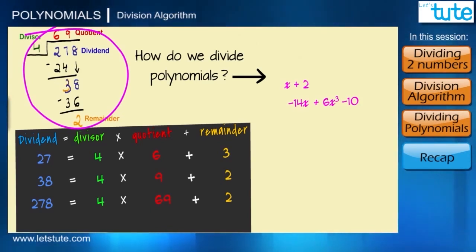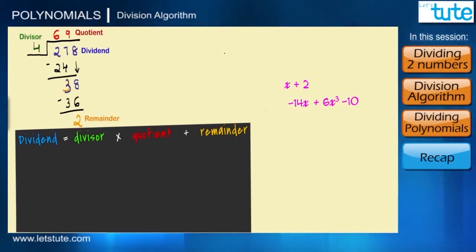So as in our numerical division we took smaller number as our divisor and the greater number as the dividend, in the same way here we will take the polynomial with the smaller degree as our divisor and the polynomial with greater degree as the dividend. But when we write polynomials we have to first arrange them in a descending order by their degree.